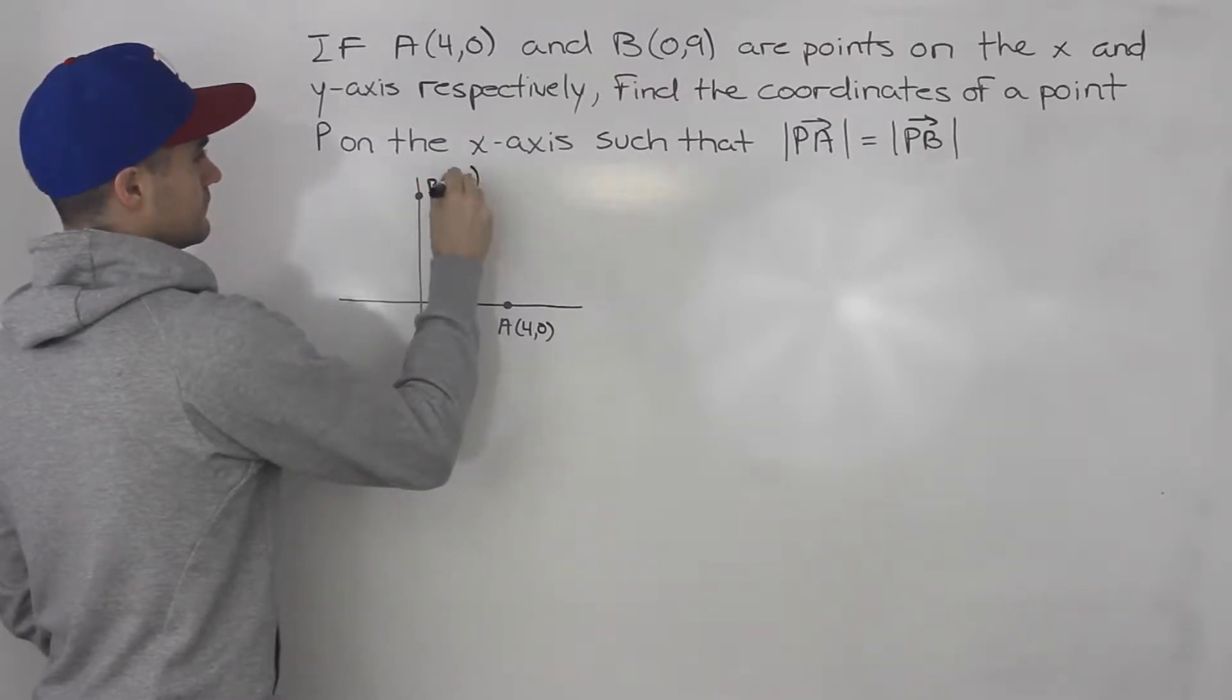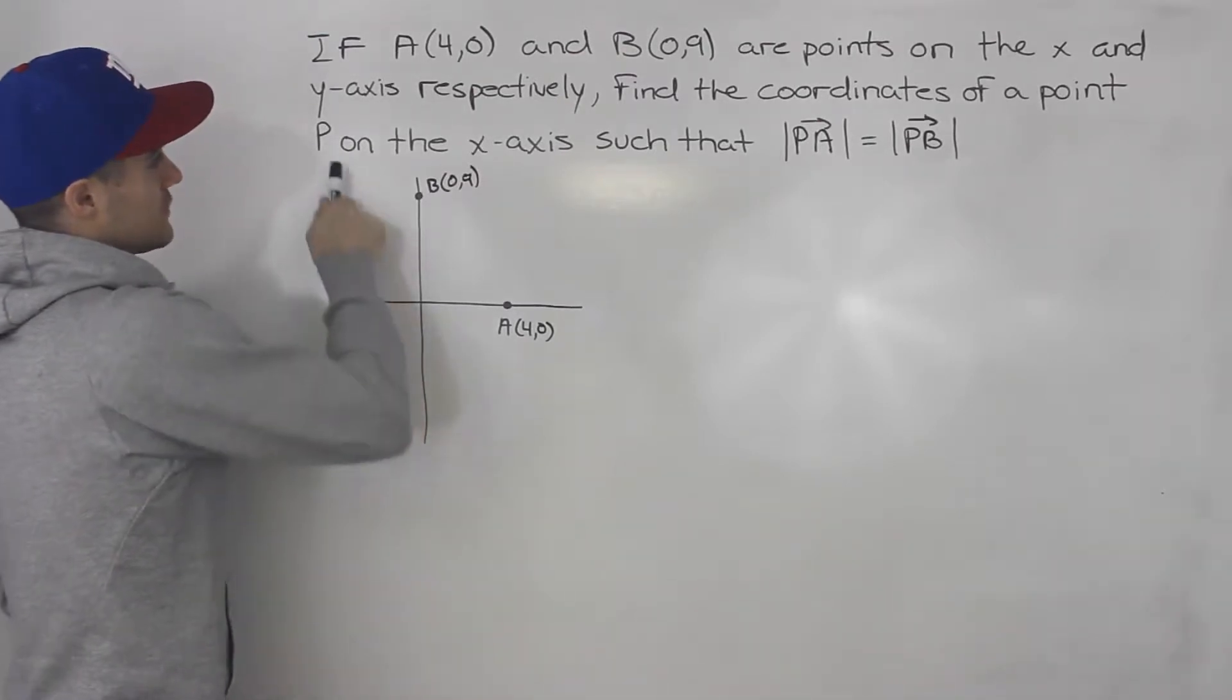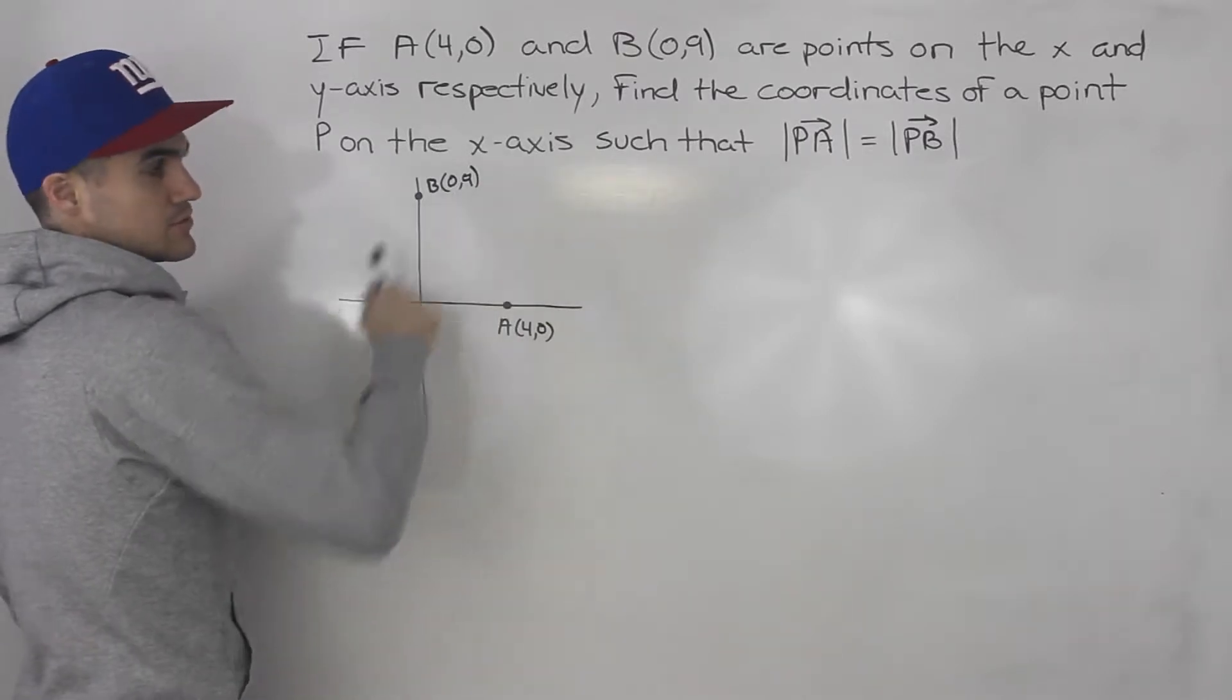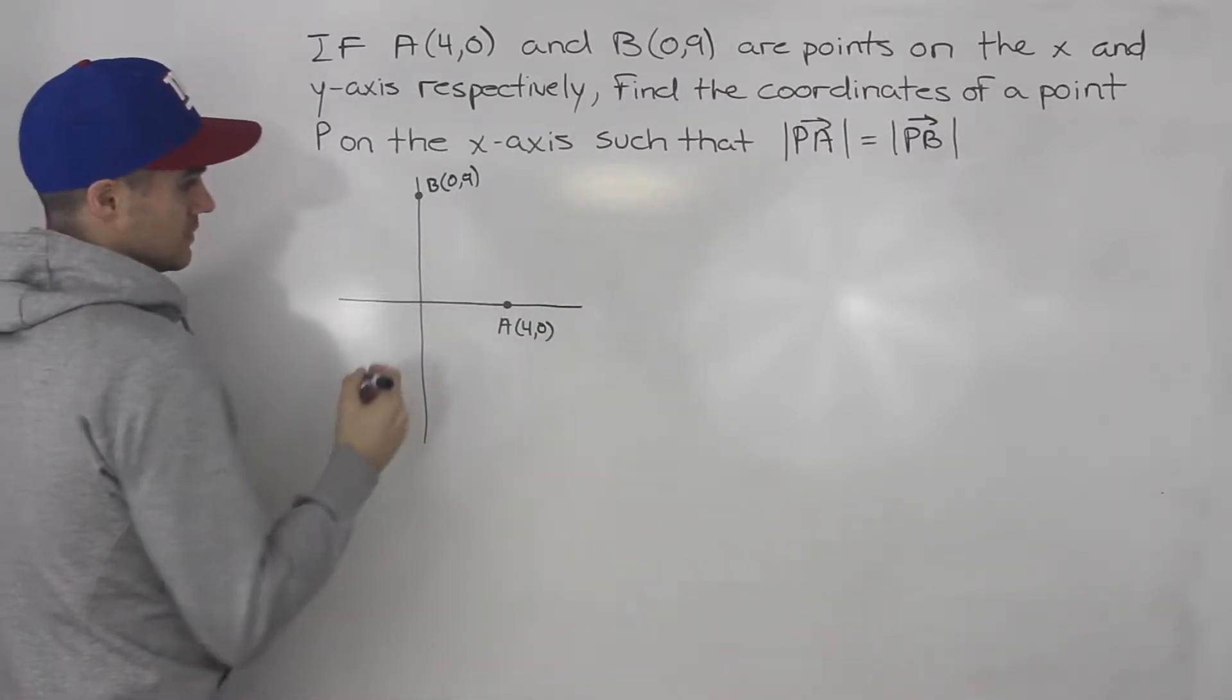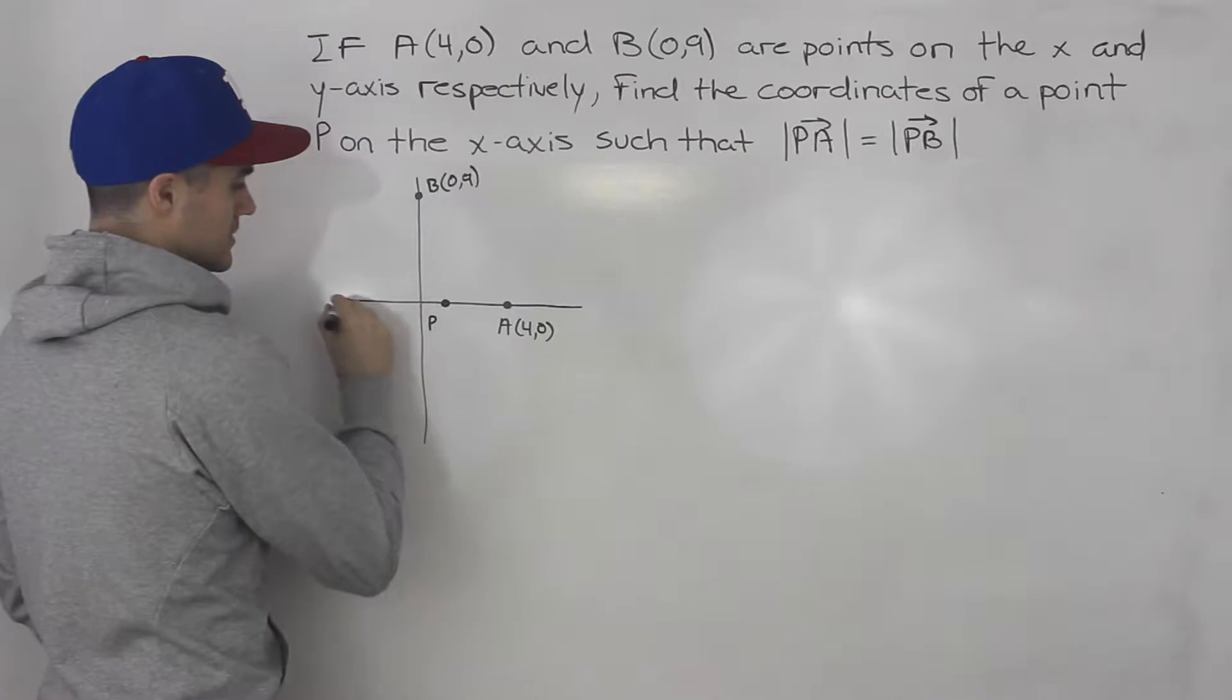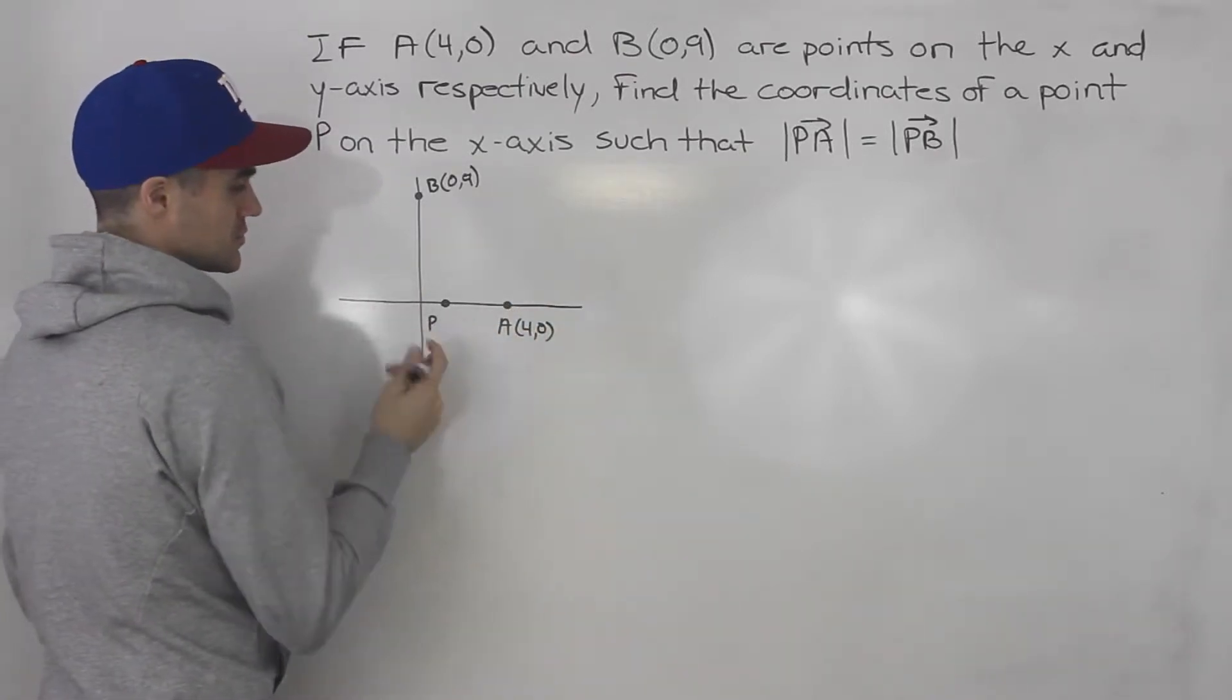We have to find the coordinates of another point P on the x-axis such that the magnitudes of those two vectors equal. Let's maybe put that point here. So let's say this is point P. Now this point P can be anywhere on the x-axis, but let's just assume it's here for now.